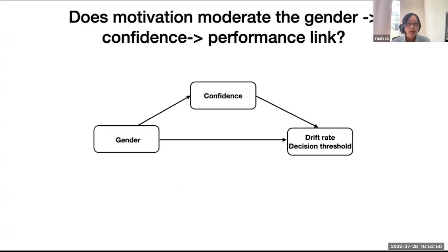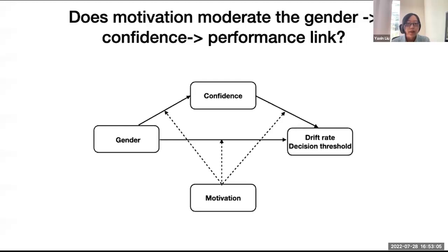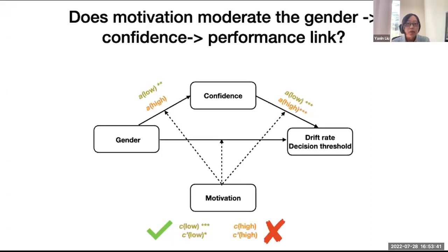Because we did not find gender differences in motivation, we were nevertheless interested in its role as a moderator of the mediated effect of confidence. We tested this by splitting participants into low versus high motivation groups. When motivation was low, confidence partially mediated the effect from gender to model parameters. However, when motivation was high, confidence was not a significant mediator between gender and model parameters, meaning that among people with high levels of motivation, there were no gender differences in either confidence or model parameters. These effects demonstrate that the mediation of confidence on gender differences depends on levels of motivation.